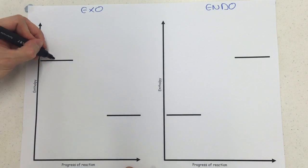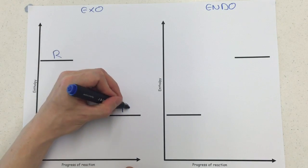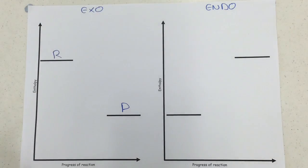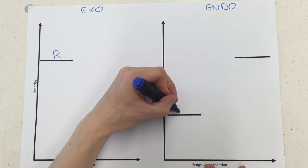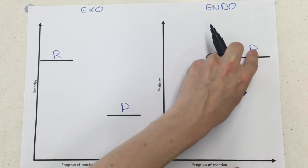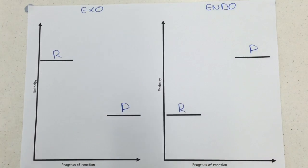For the exo, the reactants have got more energy than the products because the reactants give out energy in an exothermic reaction to the surroundings, whereas here the reactants have got less energy than the products because an endothermic reaction takes in energy to push up the energy of the total system and so the products should have more energy. So that's an easy spot right there.